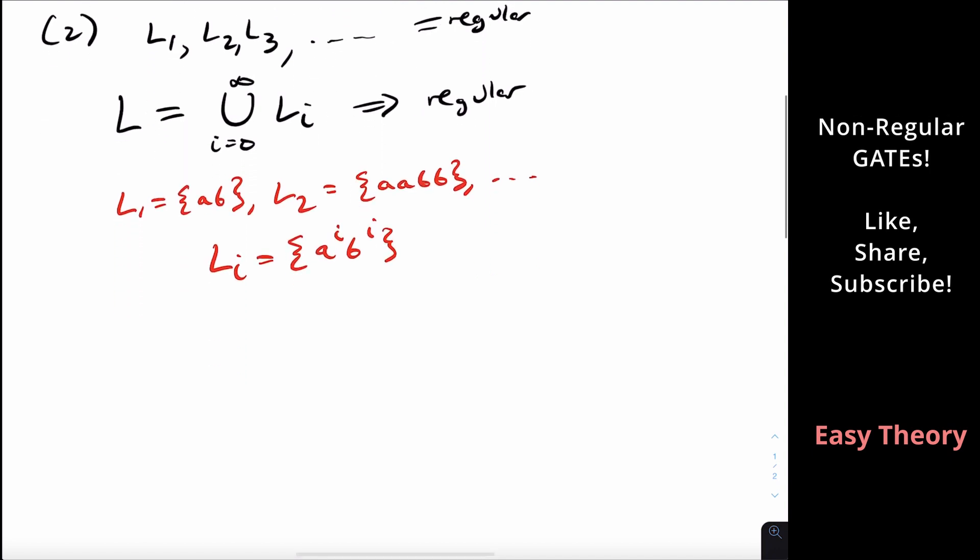This language Li is finite because there's exactly one string in there. It's not that there are many strings; there's exactly one string. And what is the union of all of these? Well, that is all possible strings of the form A to the N, B to the N for any length.